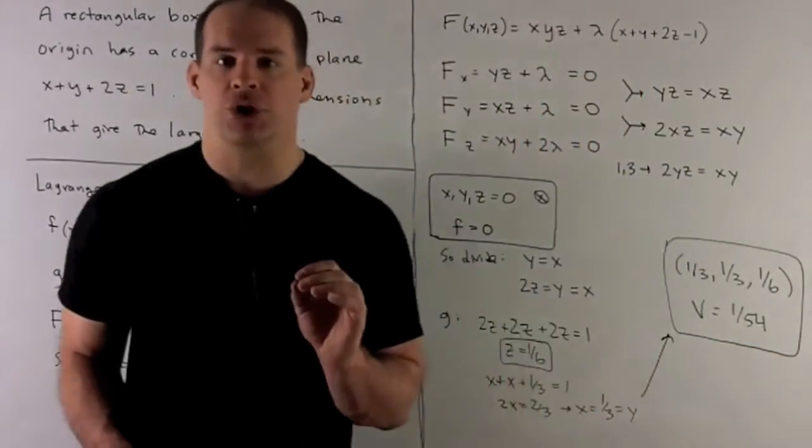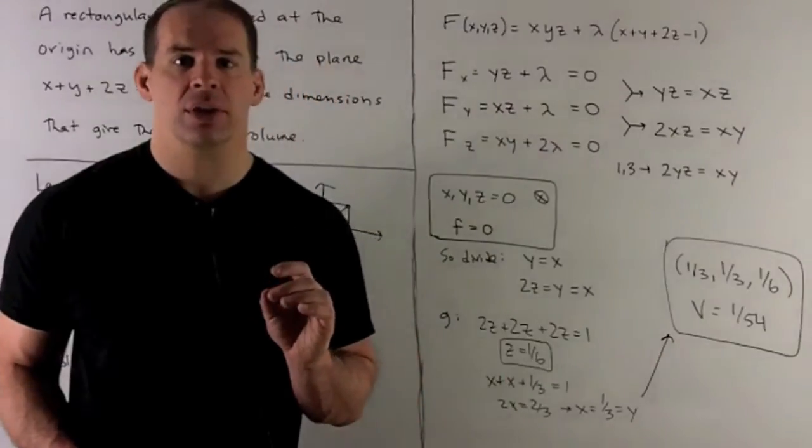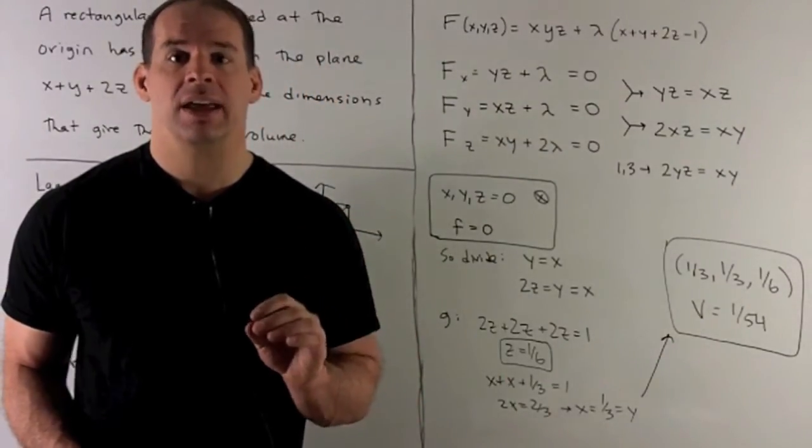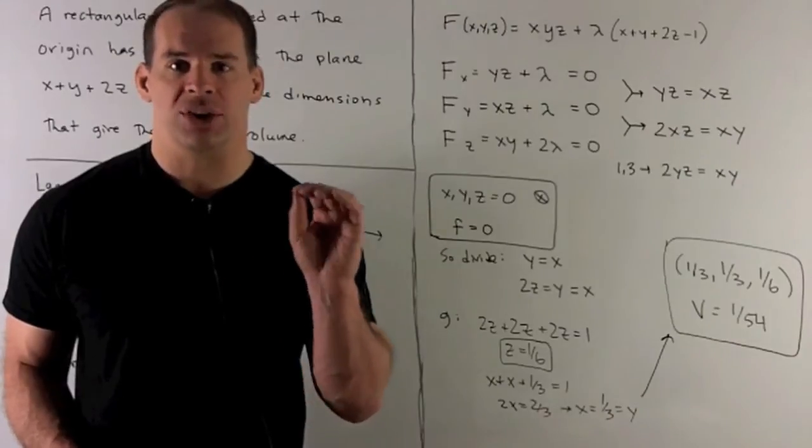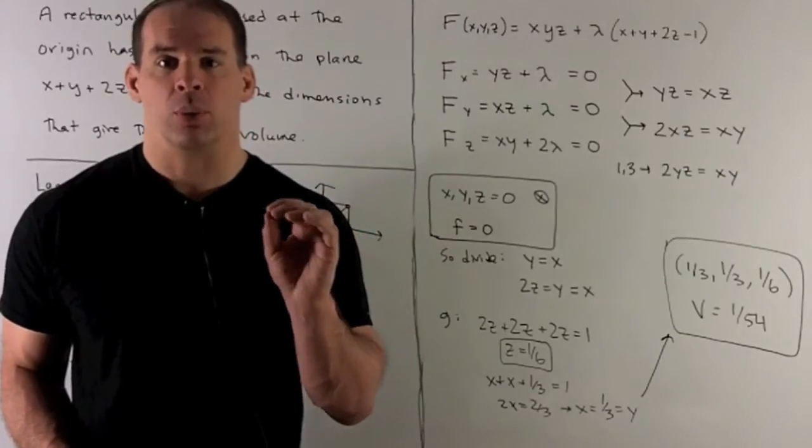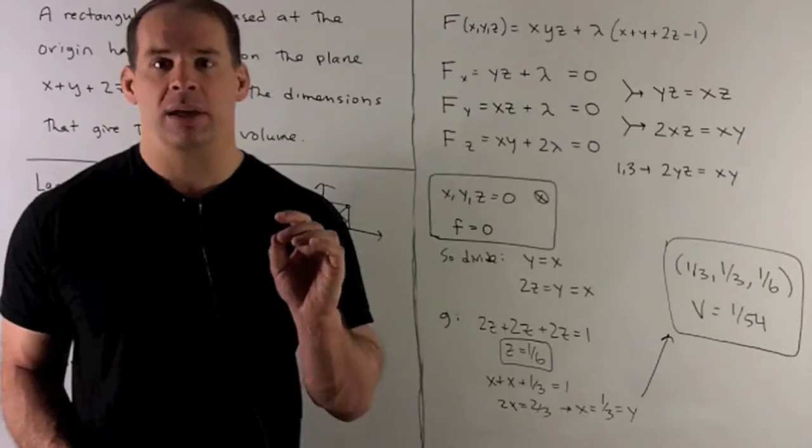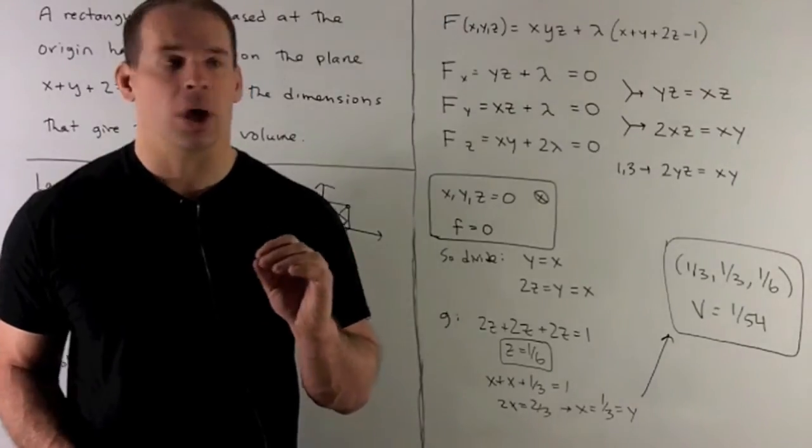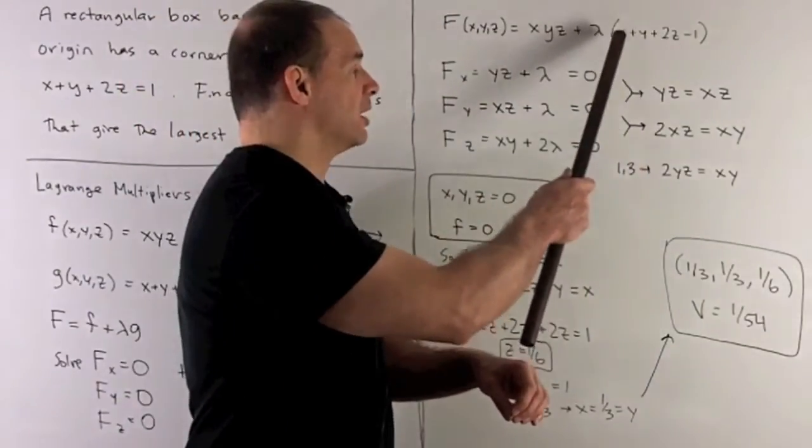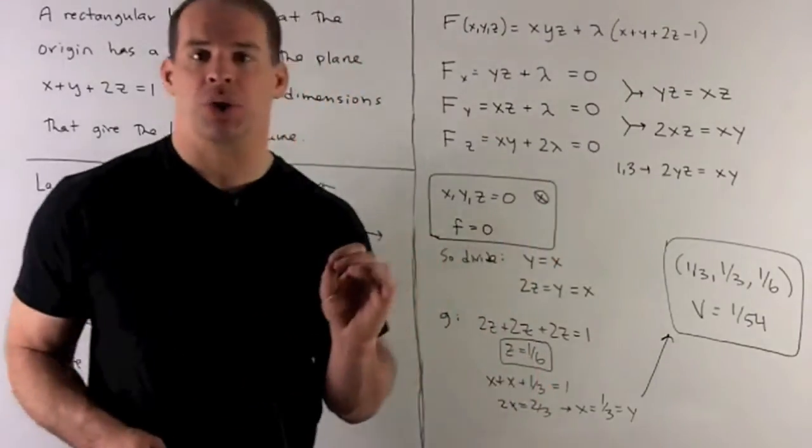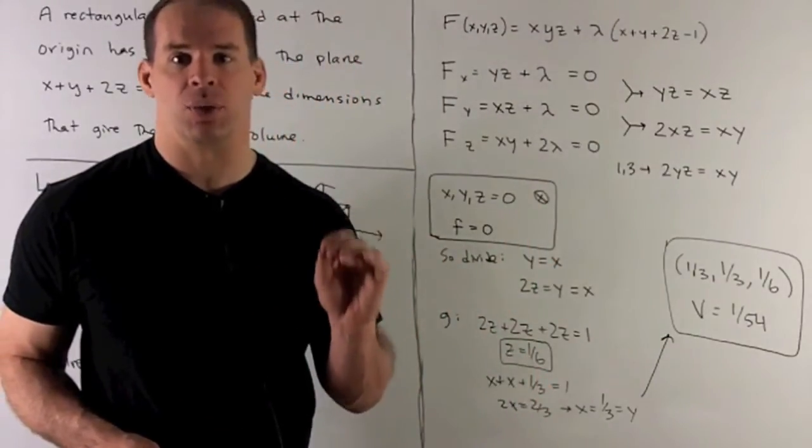When we take the partials, what happens? So for instance, if I take partial with respect to x, x is our variable, y and z are treated as constants, we're going to get y times z plus lambda. So in the constraint, the only thing that's going to survive is take x and then take its partial with respect to x. That's going to give us a 1.